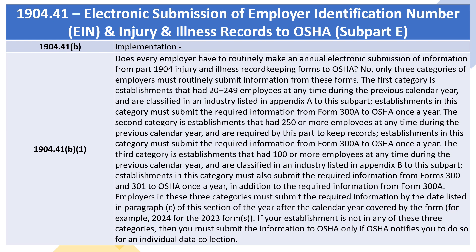Employers in these three categories must submit the required information by the date listed in Paragraph C of this section of the year after the calendar year covered by the form — for example, 2024 for the 2023 forms. If your establishment is not in any of these three categories, then you must submit the information to OSHA only if OSHA notifies you to do so for an individual data collection.